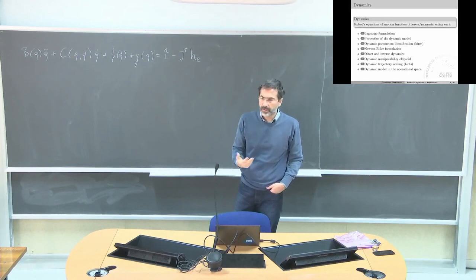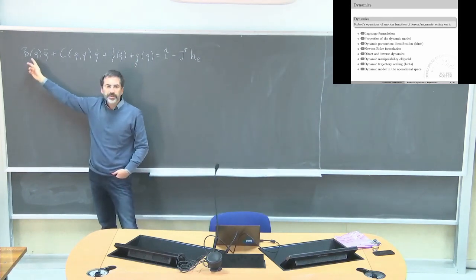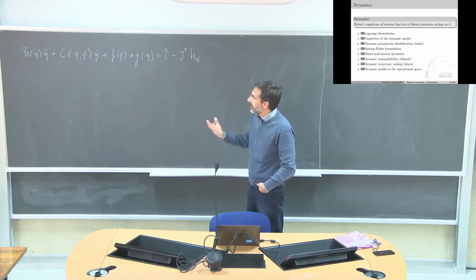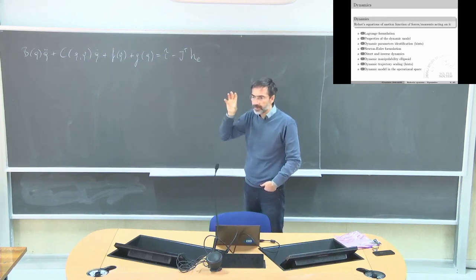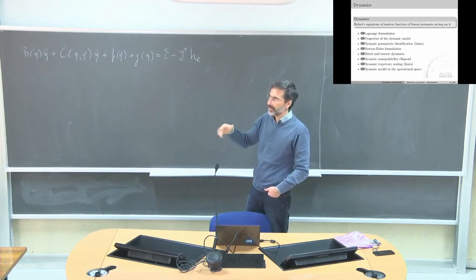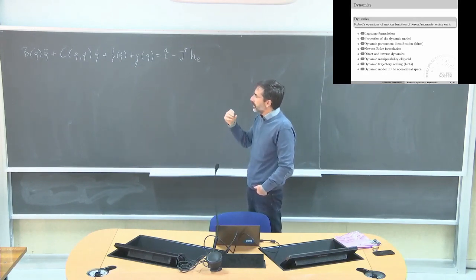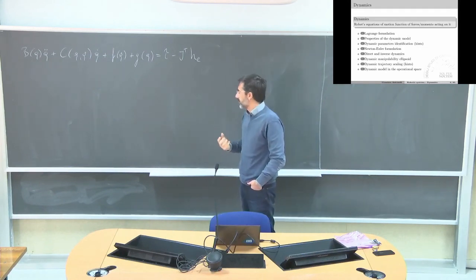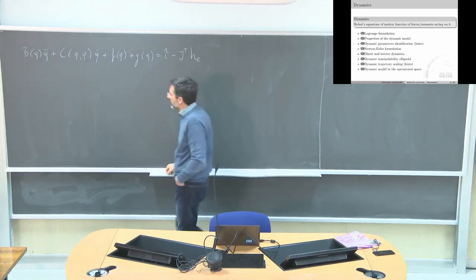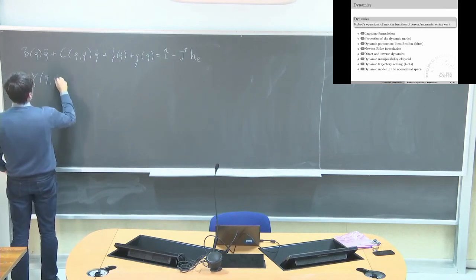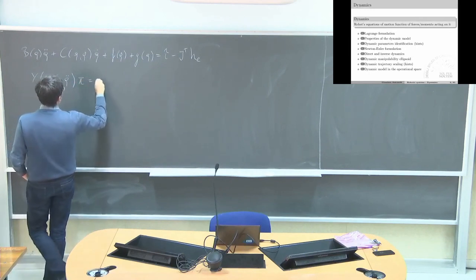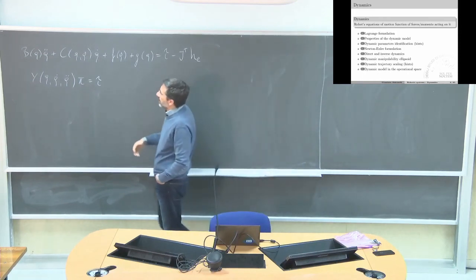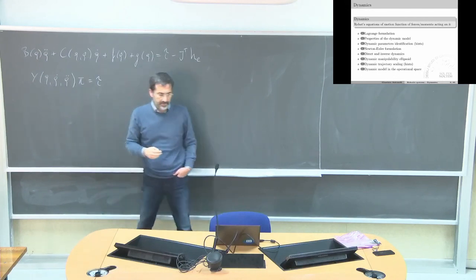We studied some properties of the dynamic model. The most important one is that the mass matrix is symmetric and positive definite. Then we have a property related to B-dot minus 2C, which has a physical interpretation used to design controllers — so we should know it. We also saw that this model can be written in a regressor form exploiting the linearity in the parameters.